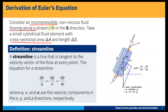The fluid is flowing along a streamline. A streamline is a line that is tangent to the velocity vector of the flow at every point. The equation for a streamline is dx/u = dy/v = dz/w, where u, v, w are the velocity components in the x, y, and z directions respectively.